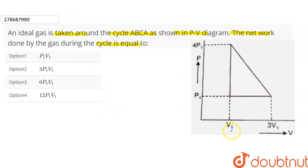In this question, we have an ideal gas taken around the cycle ABCA. This is a cycle process. This is a PV diagram. We have net work done by the gas during the cycle.